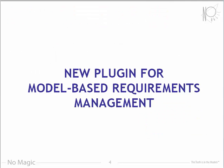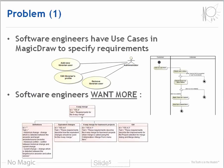Now let's examine the new Cameo Requirements Modeler plugin. The Cameo Requirements Modeler plugin supports model-based requirements management. It's primarily intended for software engineers, but may also help other engineers. Software engineers already had some support for requirements in MagicDraw — in UML they had use case diagrams, activities, and sequence diagrams for capturing the primary, alternative, and exception scenarios. But they also used text-based functional and non-functional requirements and stored these types of requirements somewhere outside the model.